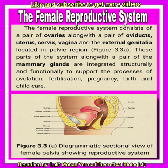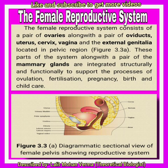Today we will discuss the female reproductive system of human beings. It is located in the pelvic region and comprises a pair of ovaries, external genitalia, accessory ducts i.e. fallopian tube, uterus, cervix and vagina, and accessory glands i.e. vestibular gland and mammary glands.